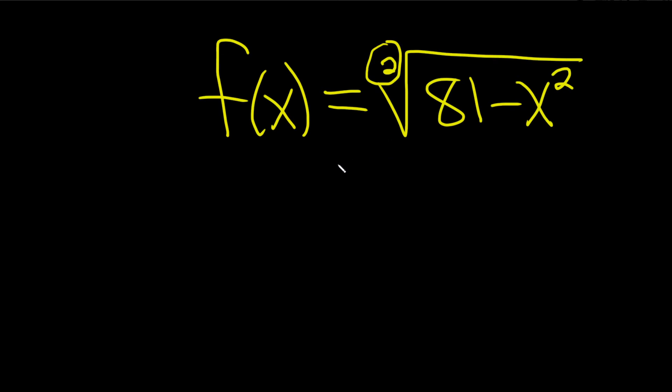So whenever you're looking for the domain of a root function, and the index, this is called the index, and the index is even, the first step is you take whatever's inside your root and you set it greater than or equal to zero.